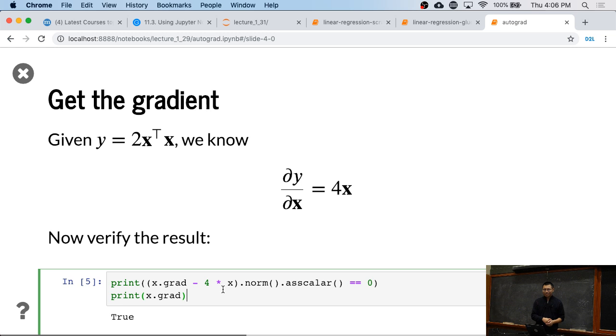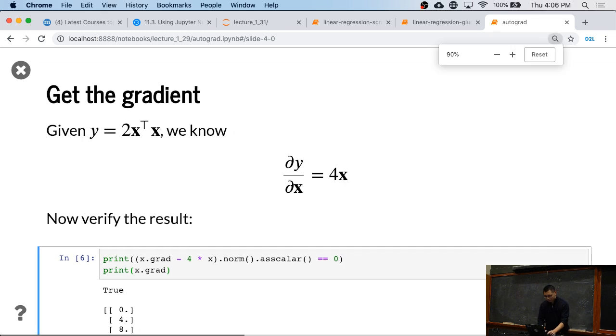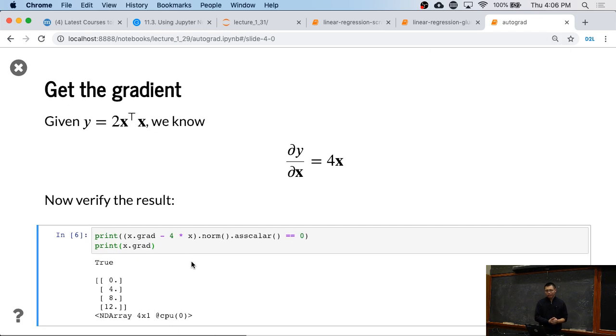So we're going to run this one. Then now we know that how Y is computed. We know the gradients is 4 times X. So now, evaluate X dot grad minus 4 times X. And then we compute the L2 norm and a scalar equal to 0. And also print X squared. So you're going to see that the result is what we expected.